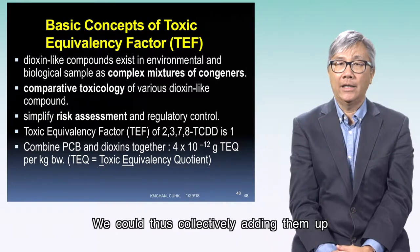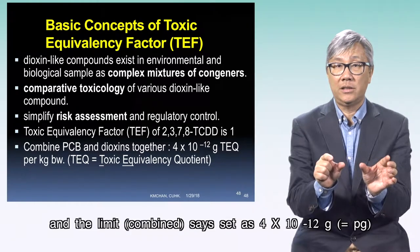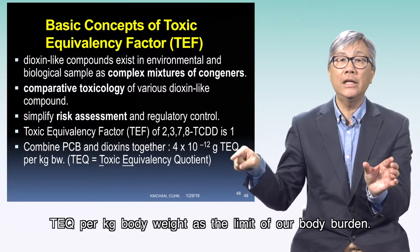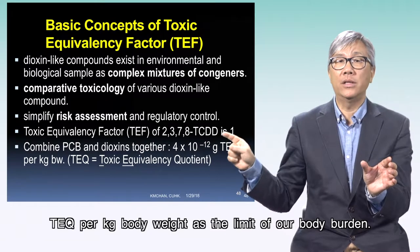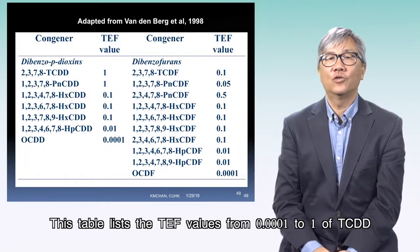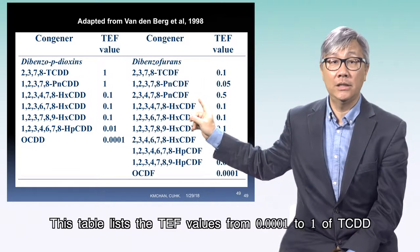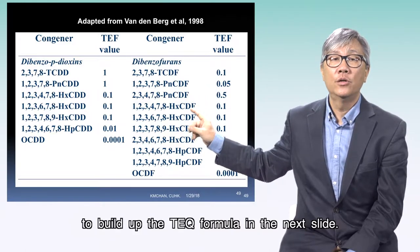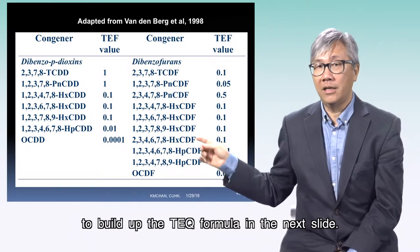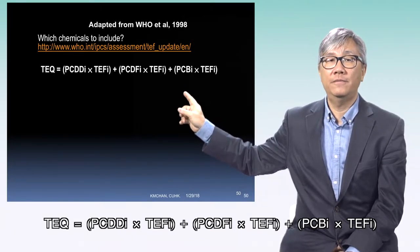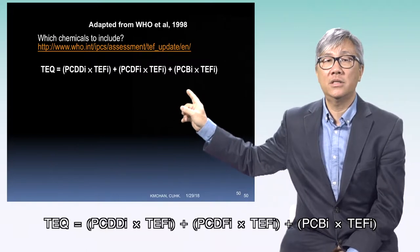We can thus collectively add them up at different concentrations, with the limit set at 4 × 10⁻¹² grams TEQ per kilogram body weight as the limit of our body burden. TEQ equals the concentration of PCDD × TEF, plus the concentration of PCDF × TEF, plus the concentration of PCBs × TEF.